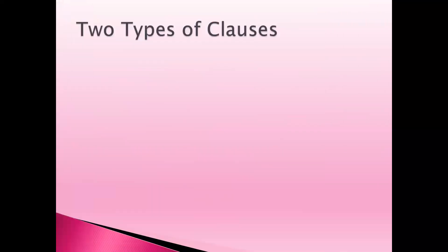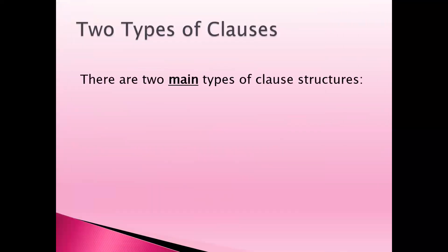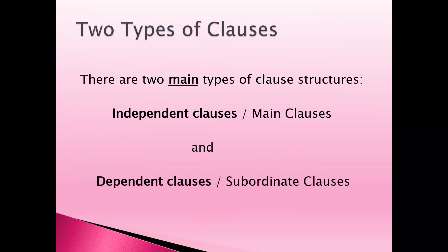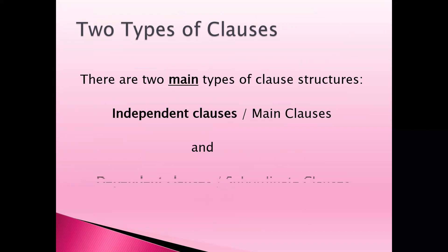We have two types of clauses. The first is the independent clause, also often called the main clause. The second is the dependent clause, also often called the subordinate clause.